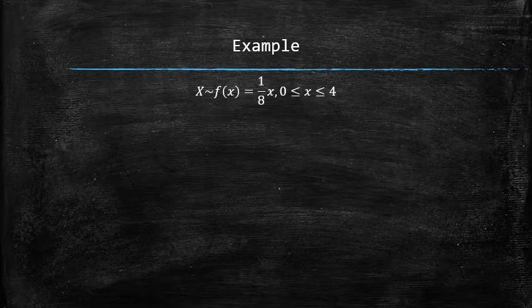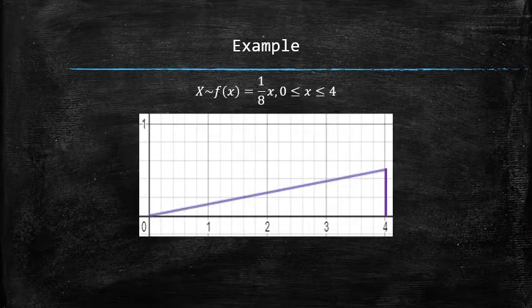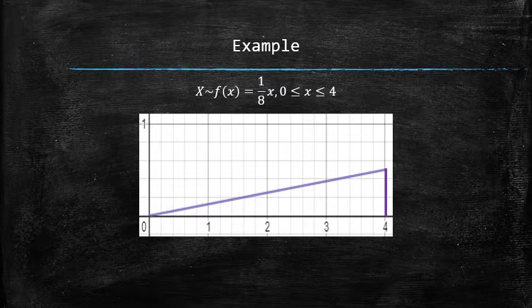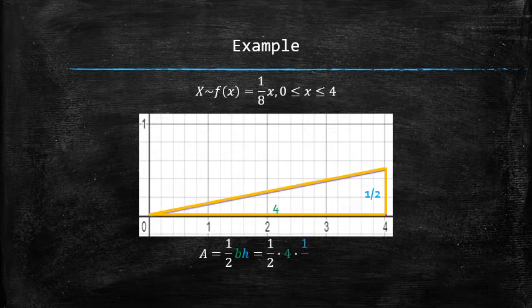It is easy to check that the graph satisfies the criteria for a probability density curve, as it is above the x-axis and its area is the area of a right triangle with base 4 and height 1/2. The area can be found using the formula for the area of a right triangle, which is of course equal to 1.